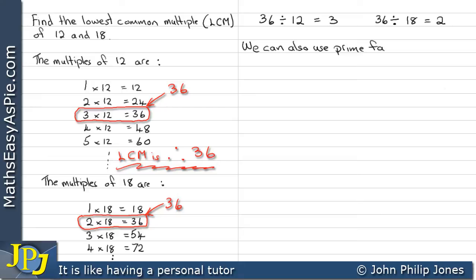We can also use prime factorization to find the lowest common multiple of 12 and 18.